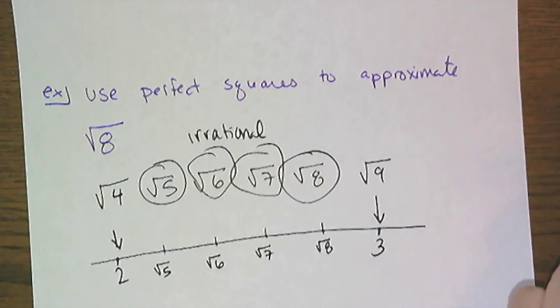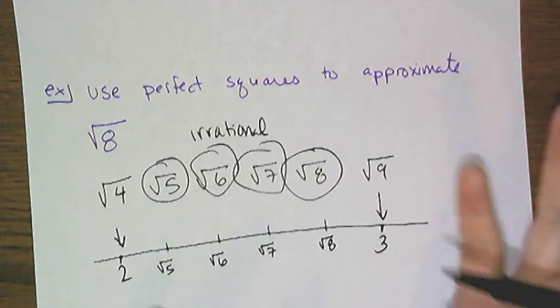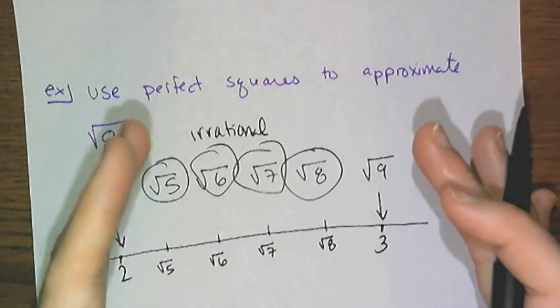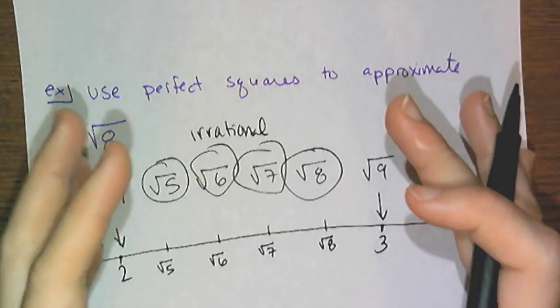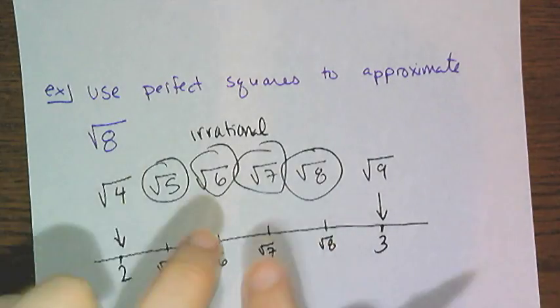If I want to find a decimal approximation of the square root of 5, I can do this. Now this is not a perfect approximation, this is not the actual decimal value, this is just one decimal place approximation.